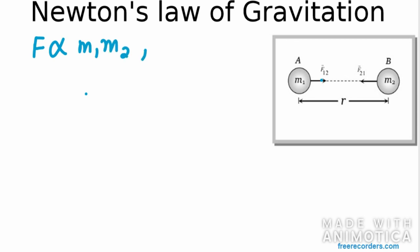Now the second thing it states that force is inversely proportional to the square of the distance. So F is directly proportional to 1 over r squared. The distance here is r, so 1 over r squared.